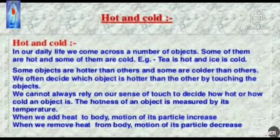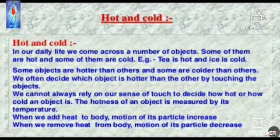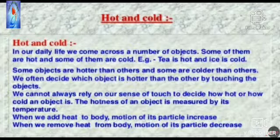These examples show that heat is produced whenever some other form of energy is used up, or some other form of energy is obtained when heat energy is used up. In our daily life we come across a number of objects — some are hot and some are cold. For example, tea is hot and ice is cold. We often decide which object is hotter by touching, but we cannot always rely on our sense of touch. So the hotness of an object is measured by its temperature.